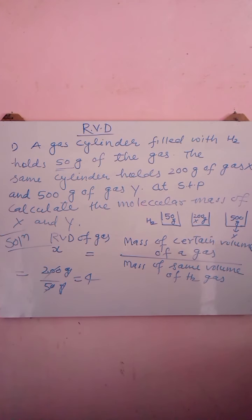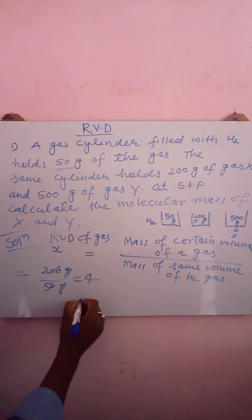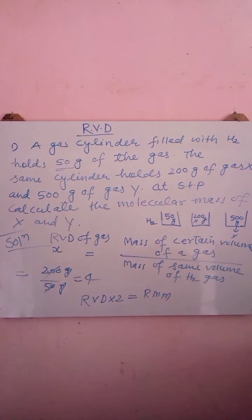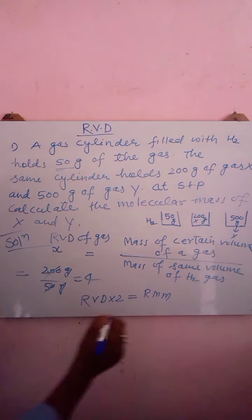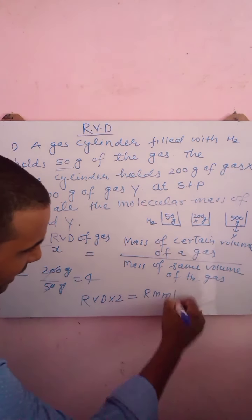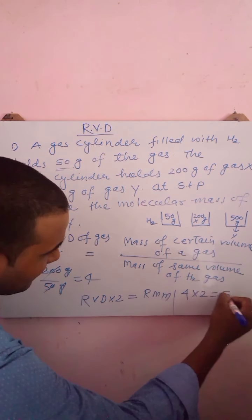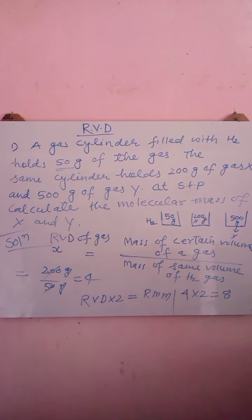We know that 2 × RBD equals relative molecular mass. RBD of gas X is 4, so 4 × 2 = 8. Therefore, the relative molecular mass of gas X is 8.